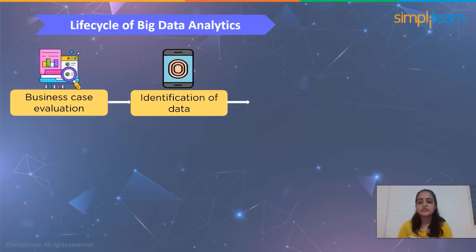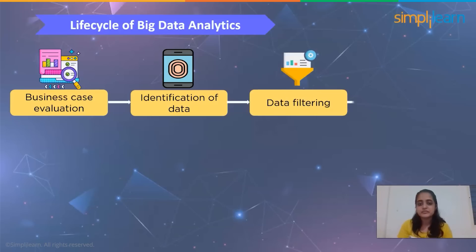In the identification of data, once the business case is identified, it is time to find the appropriate data sets to work with. Analysis is done to see what other companies have done with similar data sets. In data filtration, once the source of data is identified, data is gathered from those resources. This data is mostly unstructured and is then subjected to filtration, such as removal of corrupt or irrelevant data that is of no further use.